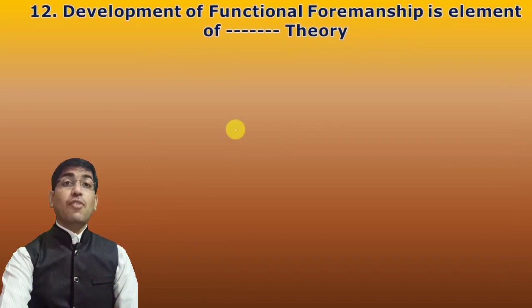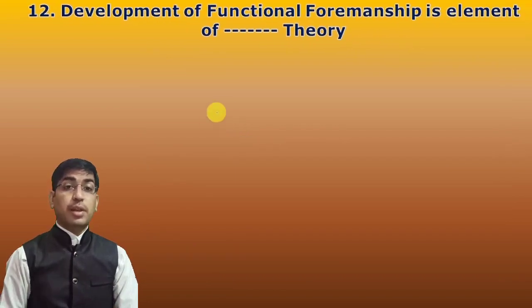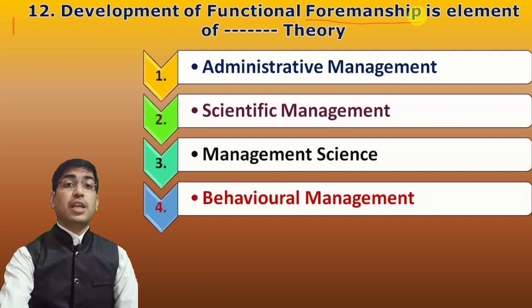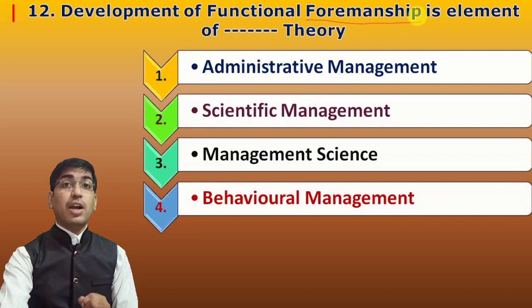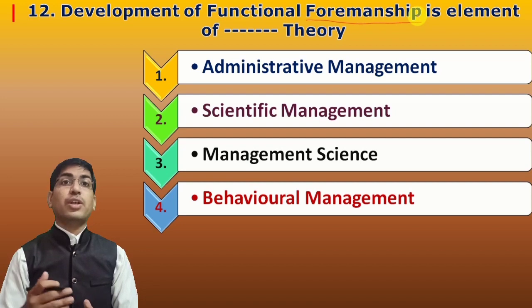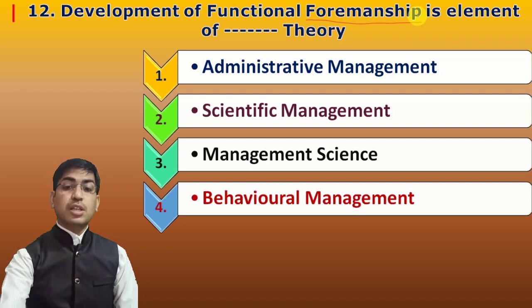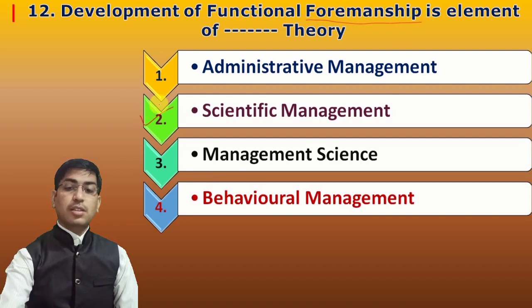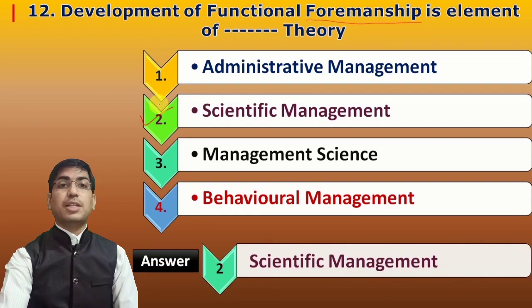Next question: Functional foremanship is an element of which theory? Functional foremanship is essentially the specialization of work, which we can also call division of work, because dividing and specializing tasks gives effective benefits. So the answer is scientific management theory, as functional foremanship belongs to scientific management.